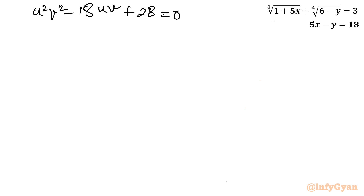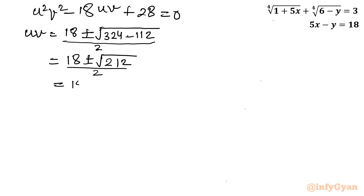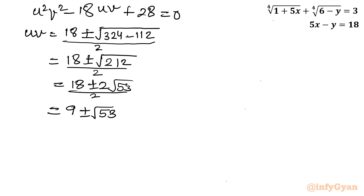Let me apply the quadratic formula to this equation in uv. Putting in the values: uv equals 18 plus or minus the square root of (324 minus 112), all over 2. That gives the square root of 212, which is 2√53. So the final values are uv equals 9 plus or minus √53.